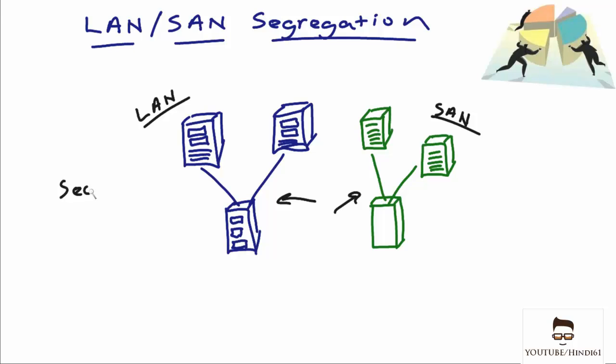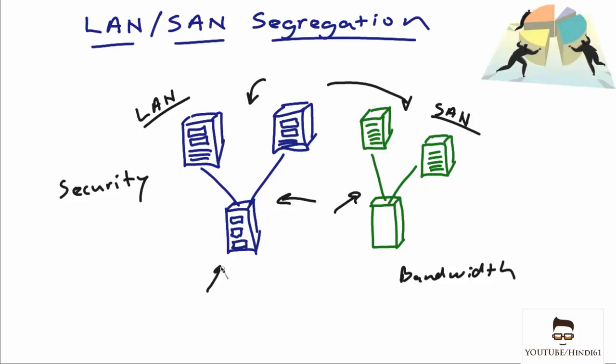One important reason has always been security. The idea is that hacking methodologies that work in the local area network — if we segregate the storage stuff off of the LAN, those same hacking methodologies would not work. Another big reason was always bandwidth: the local area network was perceived to be a much lower bandwidth infrastructure than the storage area network.